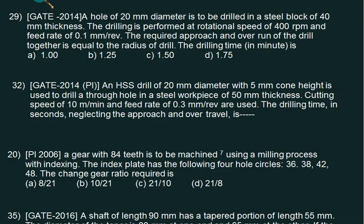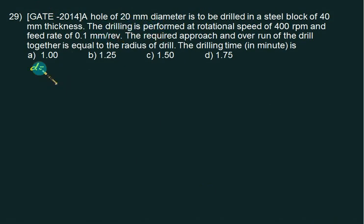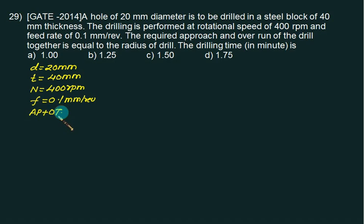This question is from 2014. A hole of 20mm diameter in steel block thickness 40mm, performed at N equals 400 RPM, feed is 0.1mm/rev. Approach and over travel run of the drill together equals radius of drill, D by 2, which is 10mm. This time we will not calculate cone height first.